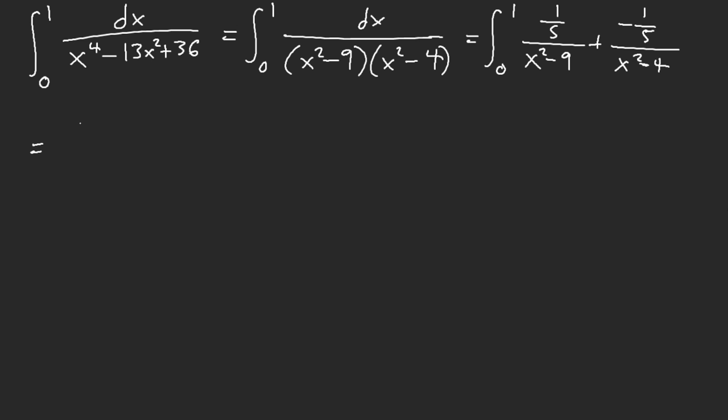So now, what we have is 1/5th of, this side is negative, so we have 1/2 of inverse tanh of x over 2 minus 1/3 of inverse tanh of x over 3.